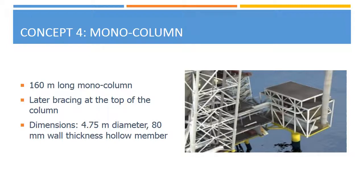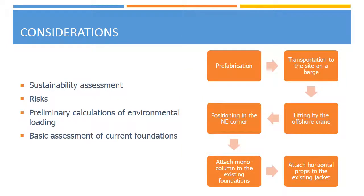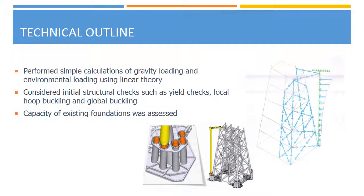Monocolumn concept. This proposal considers a monocolumn directly connected to the foundations, which will allow transferring gravity load straight to the ground. Lateral bracing will be connected to the top of the existing jacket to transfer environmental loading. This concept addresses the issue of limited space on the existing platform. Risks were assessed, including possible collision of the unit with the existing structure during installation, failure of foundations, and exceedance of the budget. Sustainability was considered by minimizing the construction and installation times, achieved by performing most of the works onshore and then transporting the monocolumn to the site where it is installed by an offshore crane.